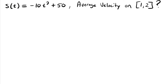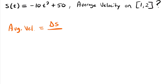Here's our example. We have a position function s of t equal to negative 10t squared plus 50, describing the position of a ball dropped from the top of a building at a starting height of 50 feet. We want to know the average velocity on the interval from time equals 1 to time equals 2. Average velocity is equal to delta s, the change in position, divided by delta t, the change in time.